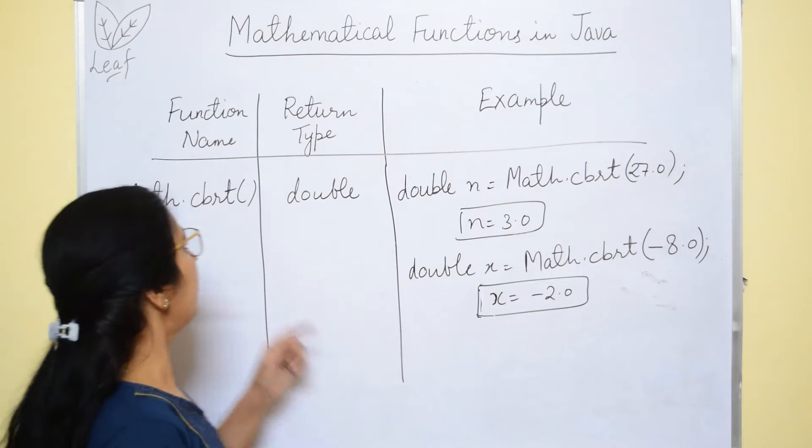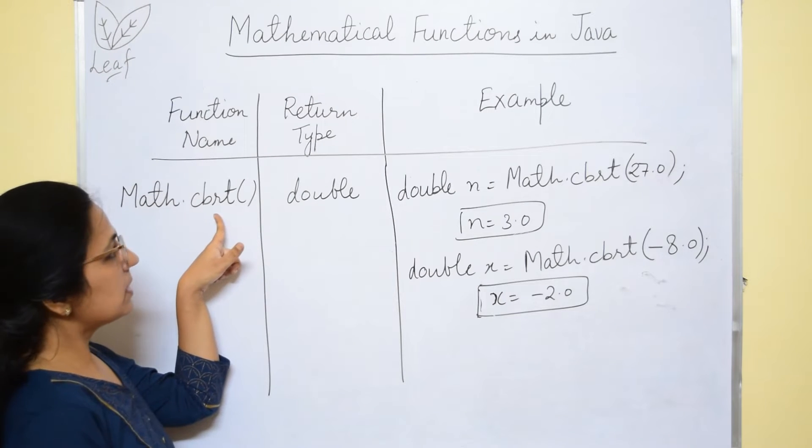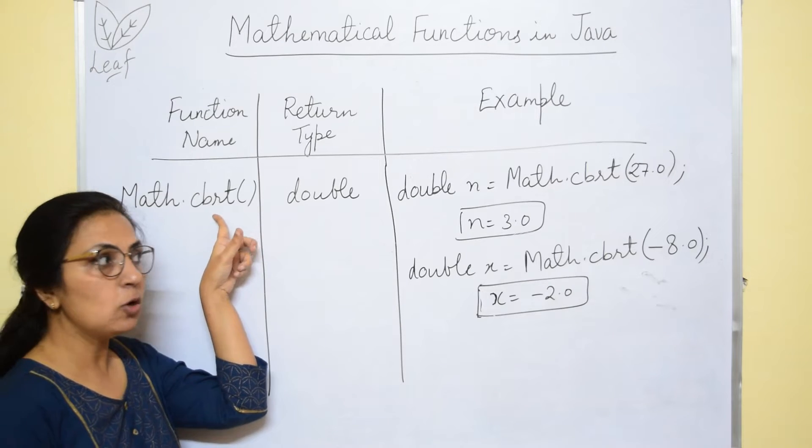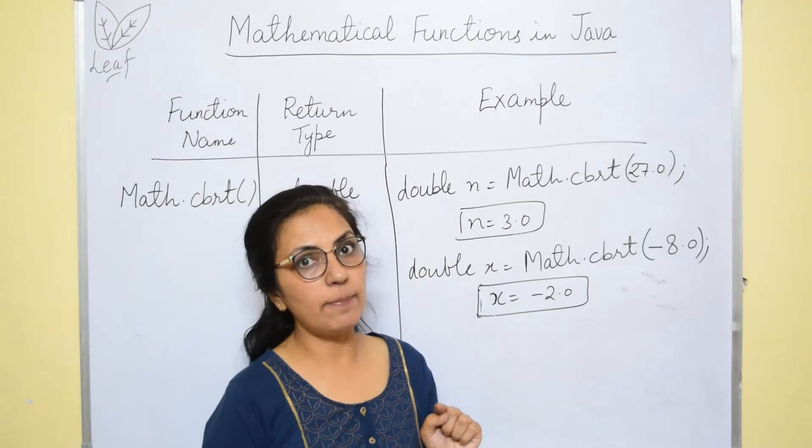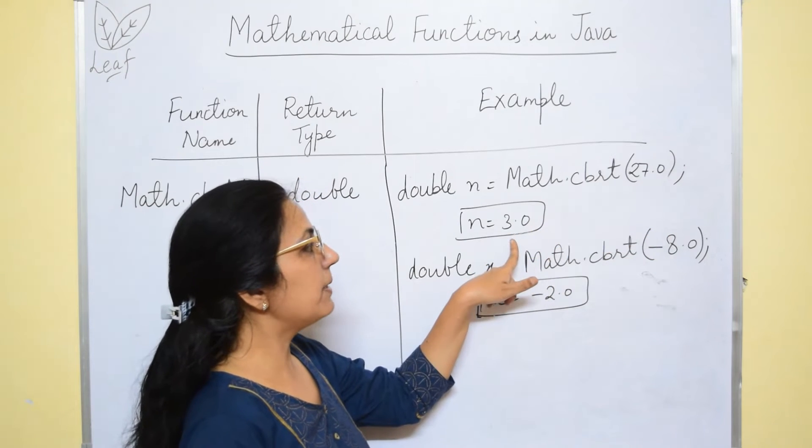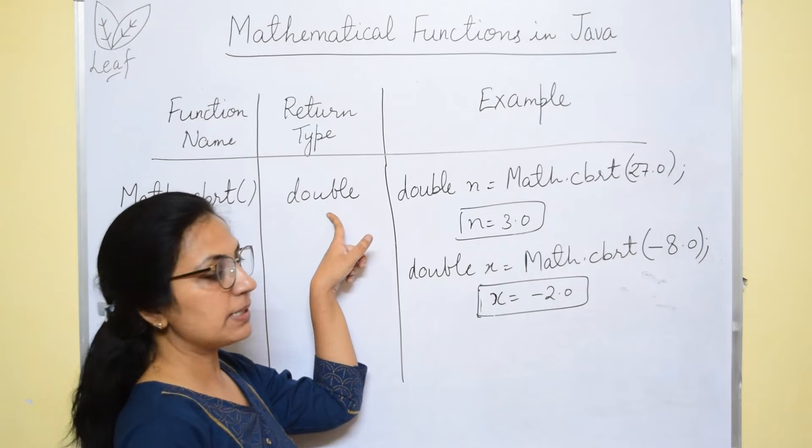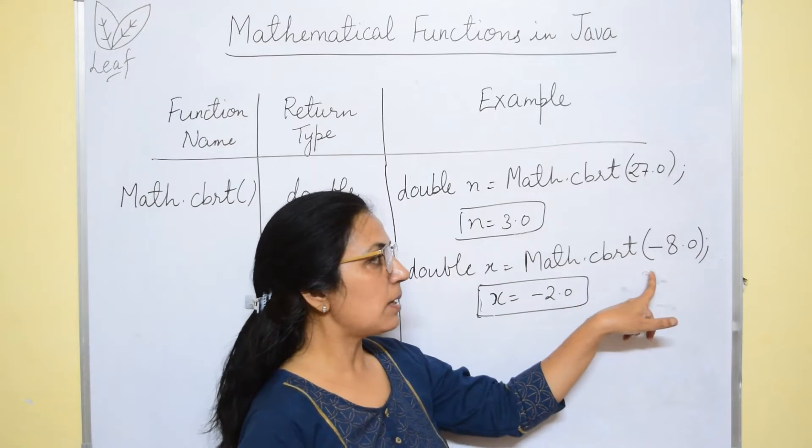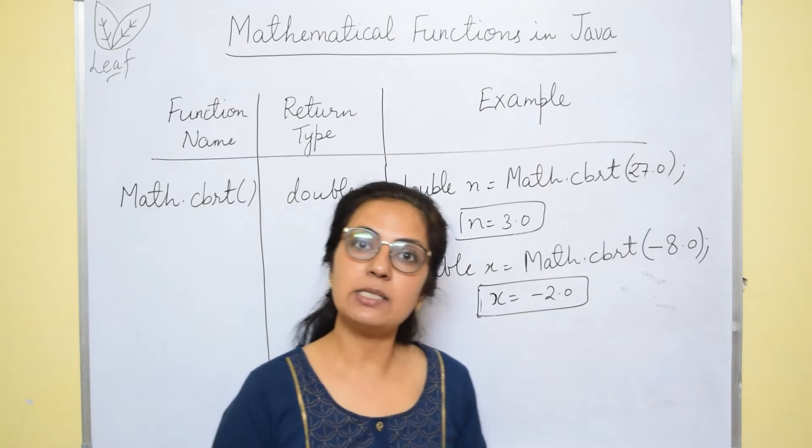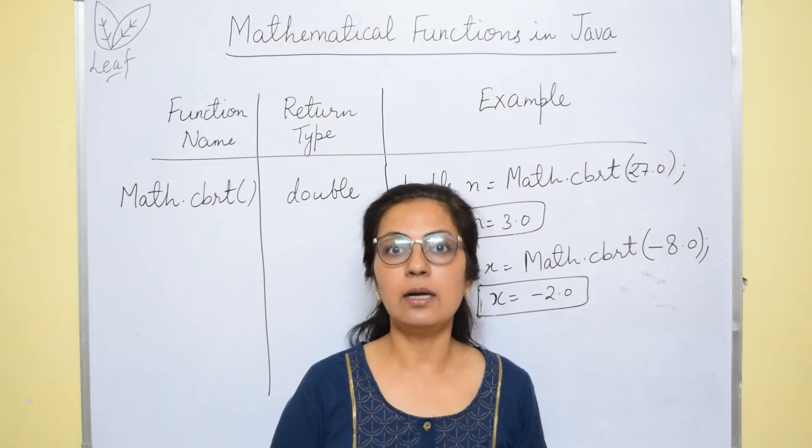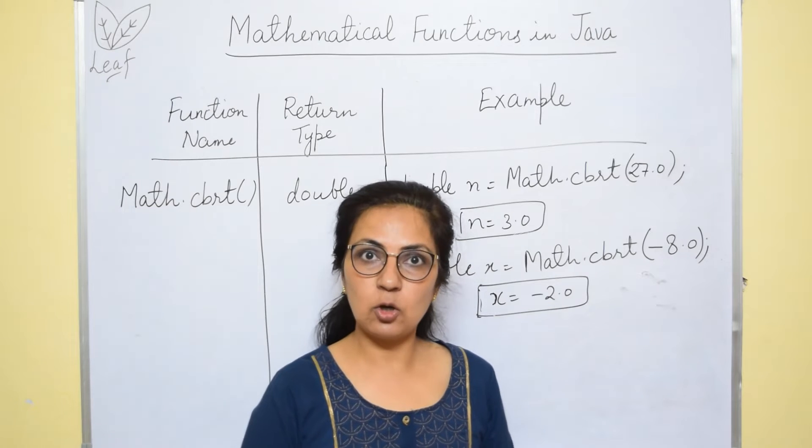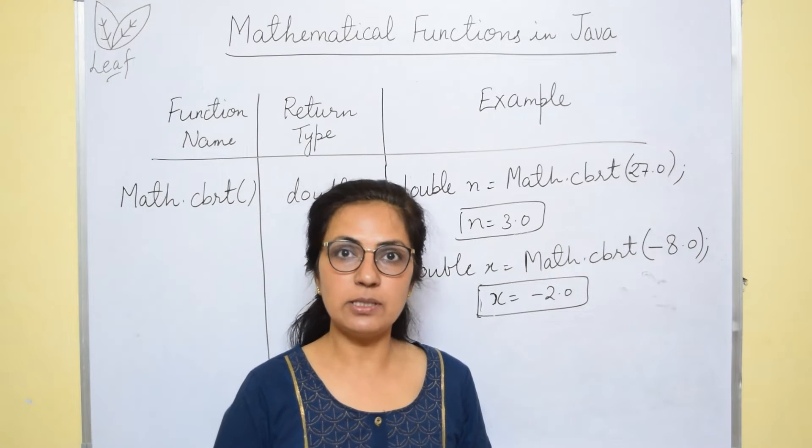Next function, we have math.cbrt. Math.cbrt returns double value. Cbrt is used for finding the cube root, cube root of a negative or a positive number. If I give math.cbrt of 27, the answer will be 3.0. It always returns double type value. And if I give math.cbrt of -8, then the answer will be -2.0. Remember, sqrt does not calculate the square root of a negative number. But cbrt function can calculate the cube root of negative as well as the positive number.